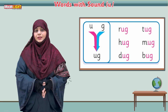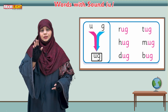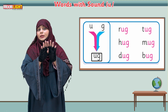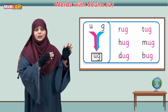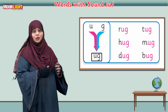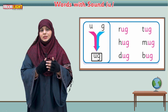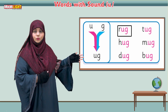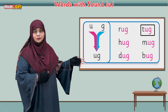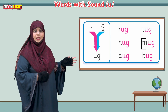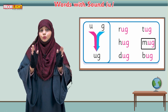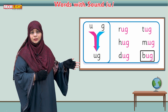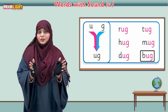We are going to join U with the letter G — G says 'ug,' this is 'ug.' When we join U with G, it will be 'ug.' Now read with me: r-ug rug, t-ug tug, h-ug hug, m-ug mug, d-ug dug, b-ug bug. These were the words which we made with the 'ug' sound.